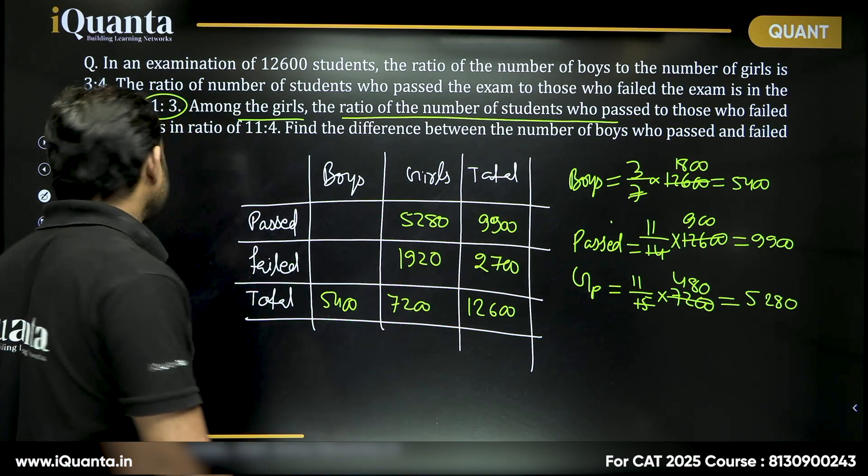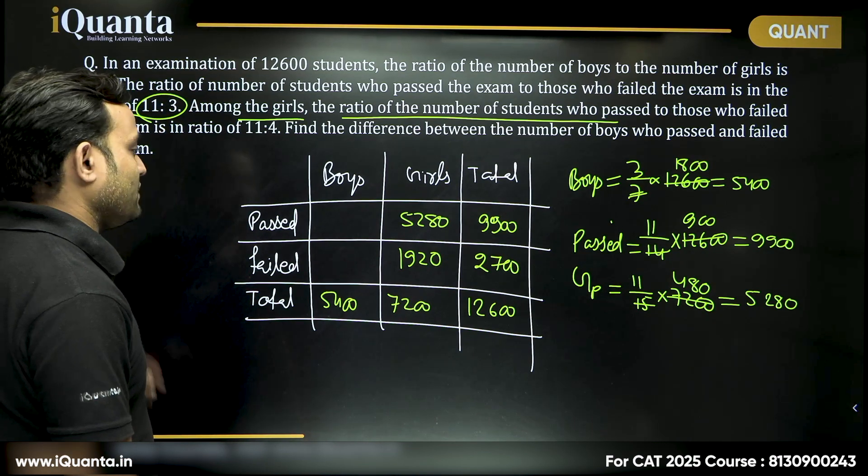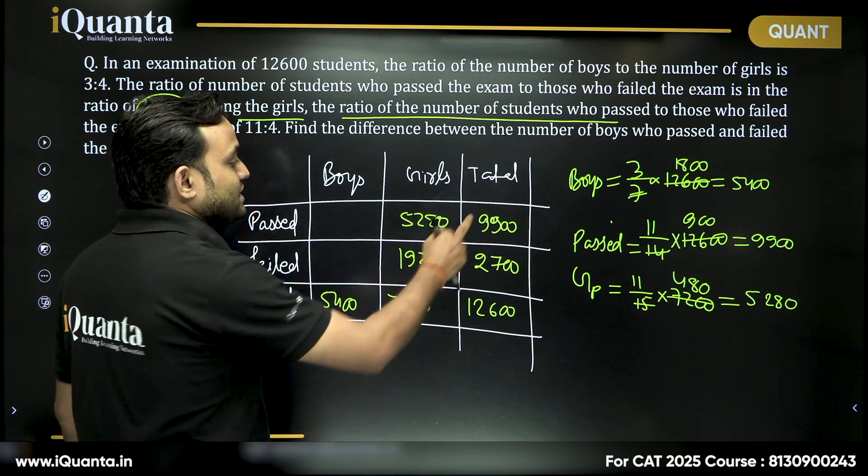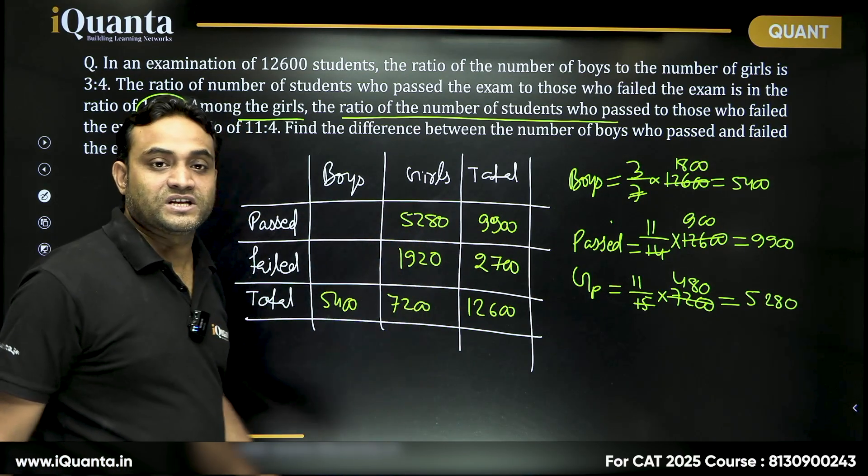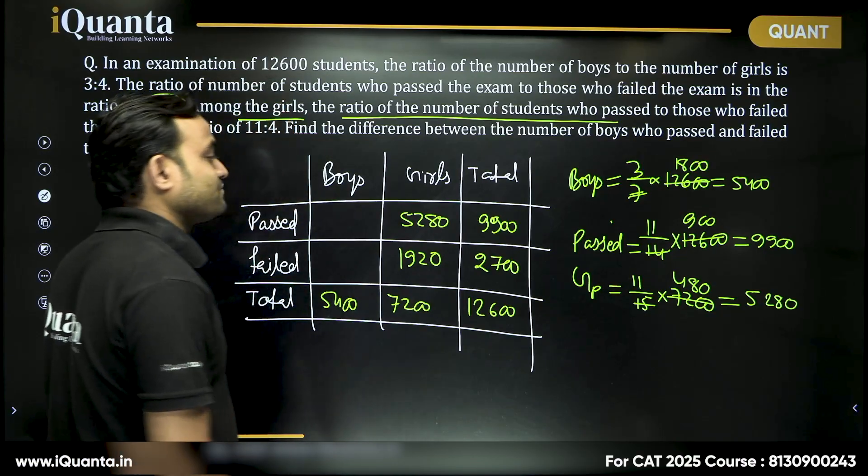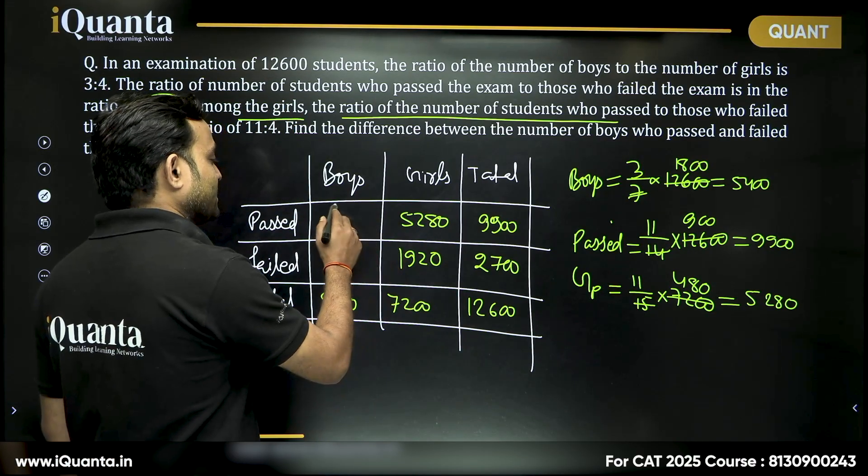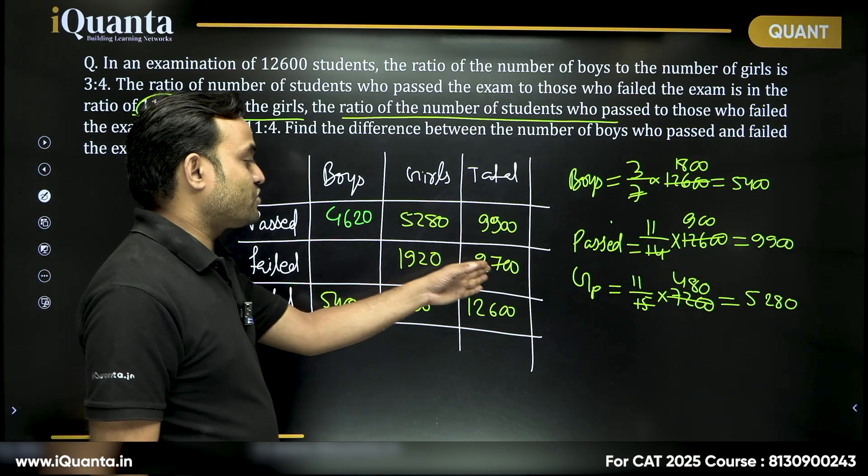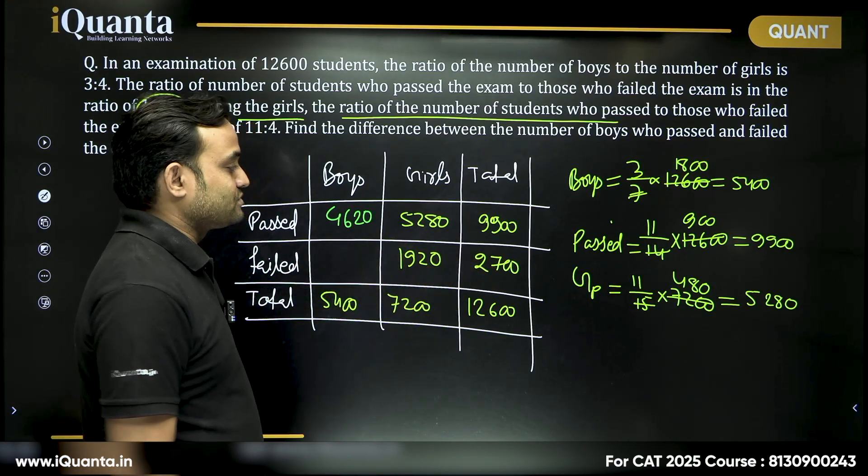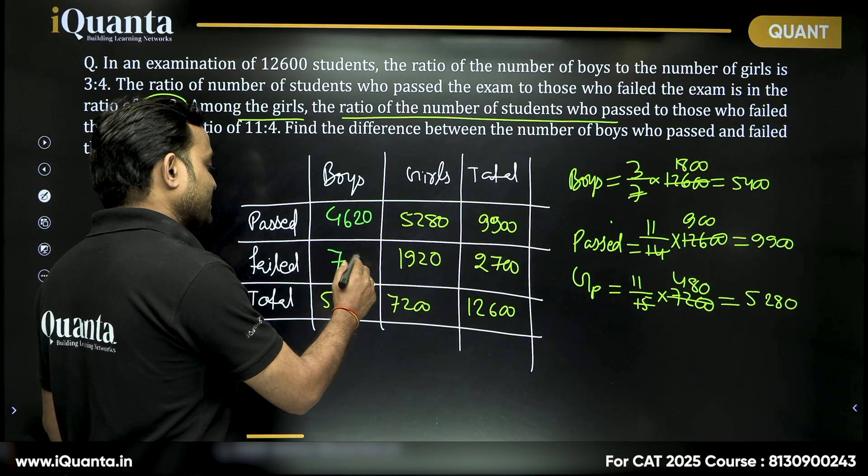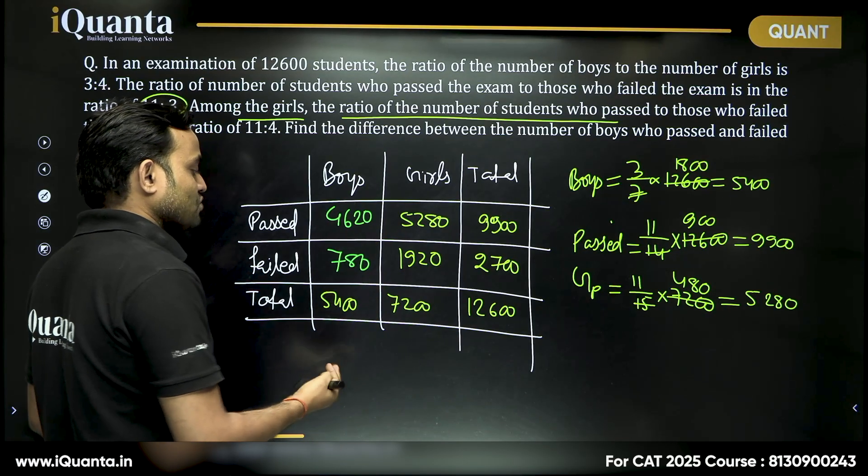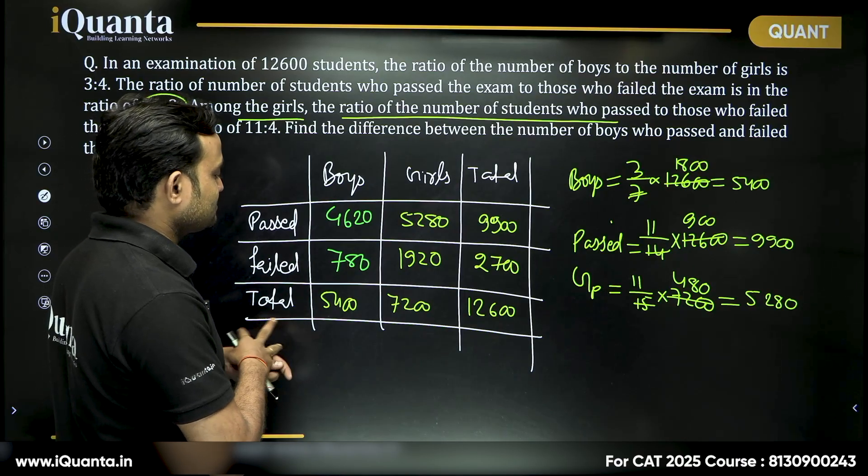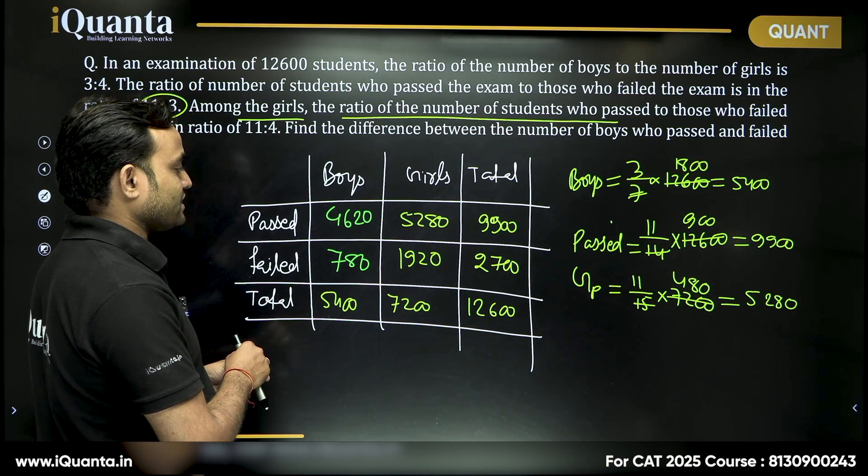So what we can say number of boys who passed will be 9,900 minus 5,280. 9,900 minus 5,300 is 4,600 plus 20, 4,620. Number of boys who failed 2,700 minus 2,780. Now if you add these two, are we getting 5,400? No, I guess this value is not 5,400. This is 5,500, right? So we must have missed something.